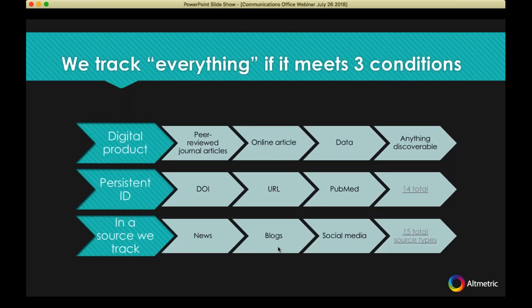You might also be curious to know about policy document citations, which are a really powerful indicator of impact. So that's a brief overview of what we capture. In order for us to track attention to something, it has to have an online presence — it has to be a digital product with a persistent identifier such as a DOI, but including URLs, ISBNs, PubMed IDs, et cetera. And then it has to be in one of the sources that we track.